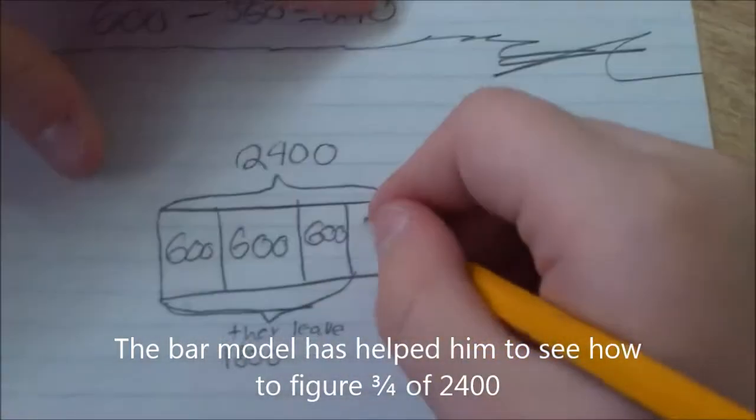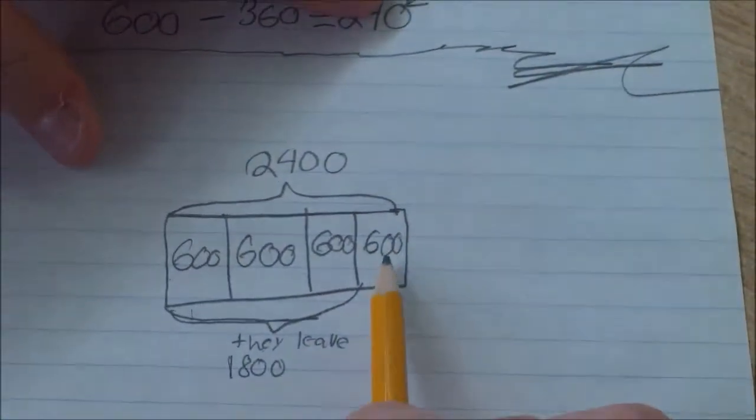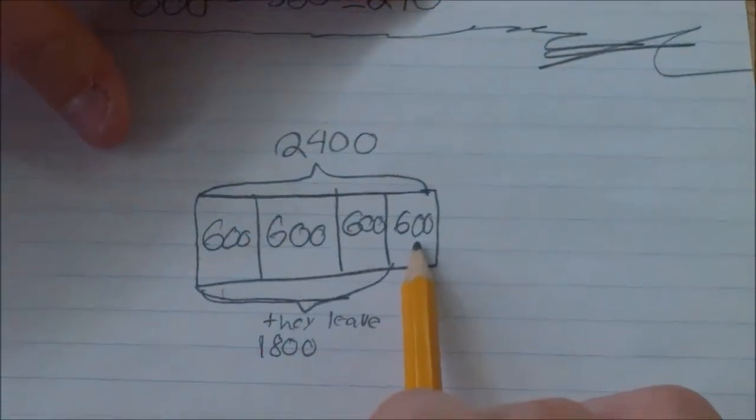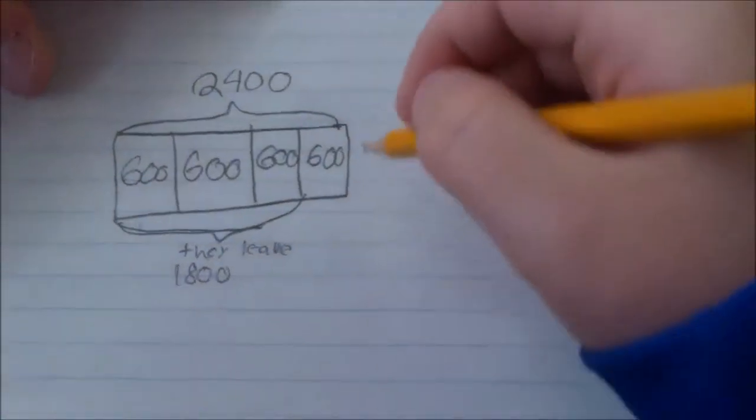And then, so that would be six hundred. So then a third of them leave. Yeah. So maybe draw a new bar. Okay. So like another one of these? Yeah, I would do that.